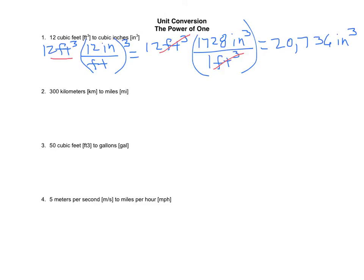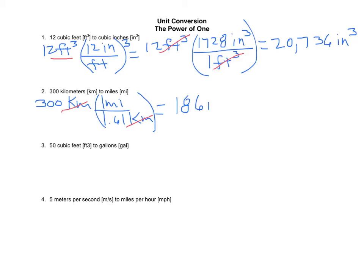Next, we convert 300 kilometers to miles. From our unit conversion sheet, 1 mile equals 1.61 kilometers. We put 1 mile in the numerator and 1.61 kilometers in the denominator, cancel out the kilometers, and divide 300 by 1.61 to get 186 miles. So 300 kilometers equals 186 miles.